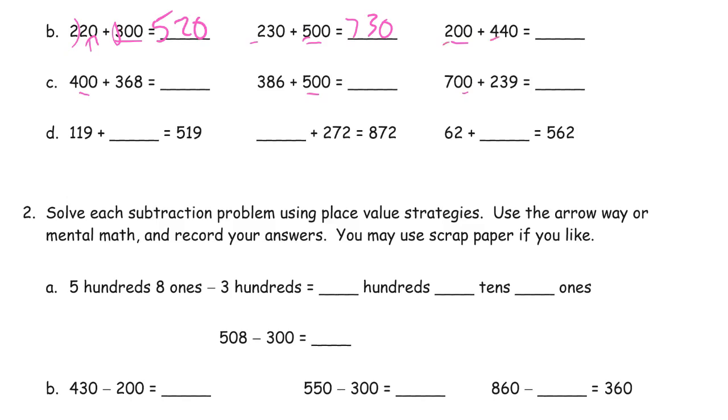200 plus 440. Well we've got 200 and 400, that's 600 and then the 40.